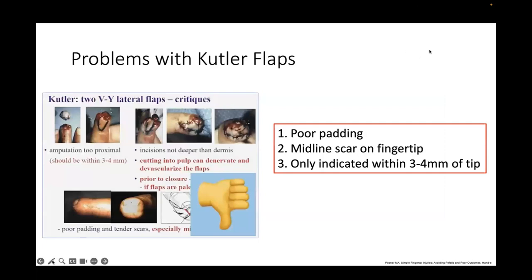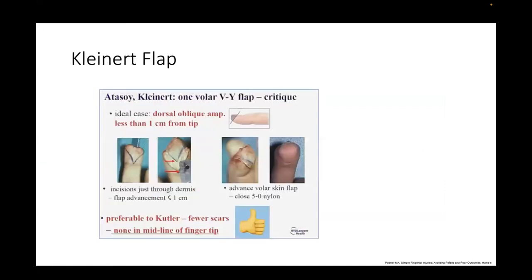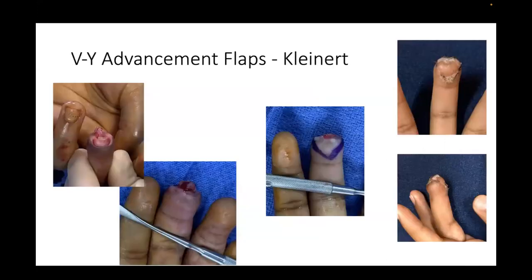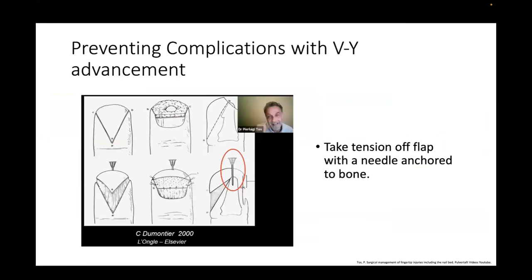Dr. Posner shows that the Kutler flaps provide poor padding, a midline often tender scar, and are only indicated within three to four millimeters of the tip. The Kleinert flap he gives a thumbs up to. However, there can be issues with the Kleinert flap leading to hook nail deformities. Dr. Toss has shown that putting a needle or pin through the flap helps take the tension off and prevents the development of hook nail deformity.